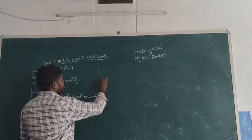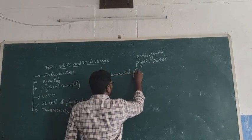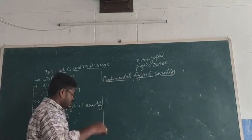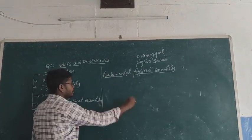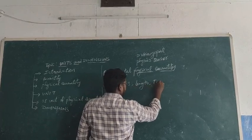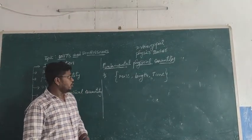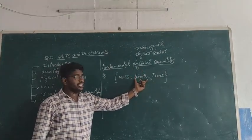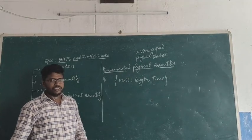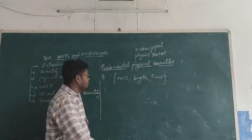First, let us discuss about fundamental physical quantity. Taking the examples: mass, length, and time. If you observe, mass, length, and time are independent of other physical quantities. A quantity which does not depend upon other physical quantities is called a fundamental physical quantity. Examples: mass, length, time — these are all independent, not dependent on another one.